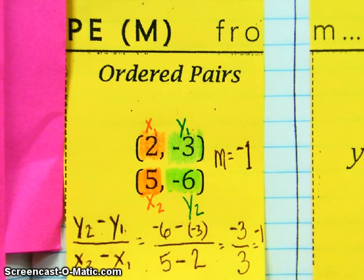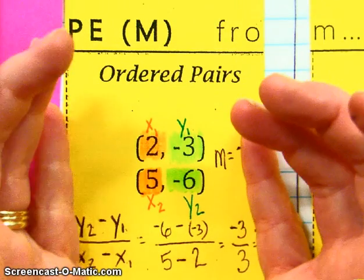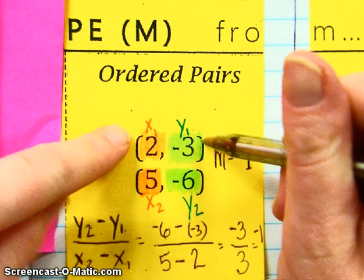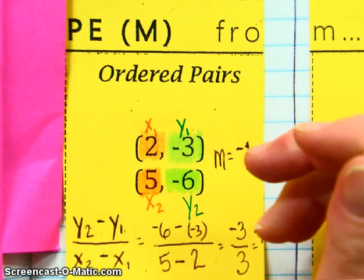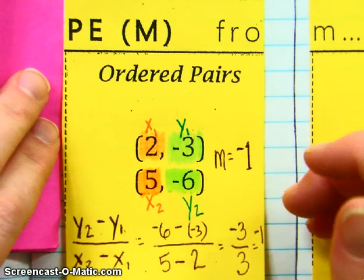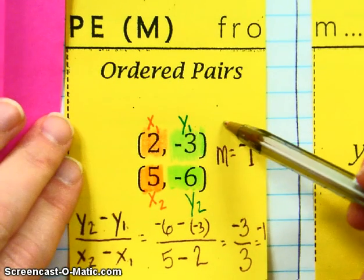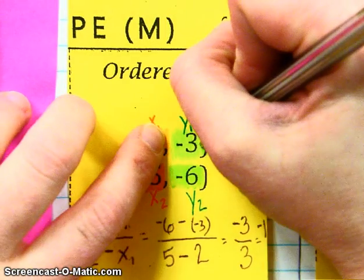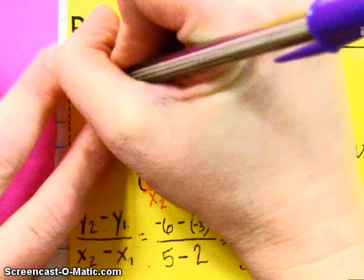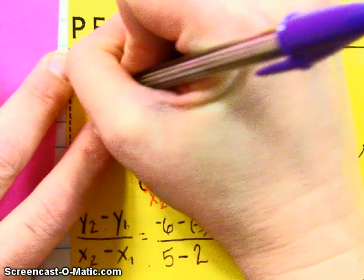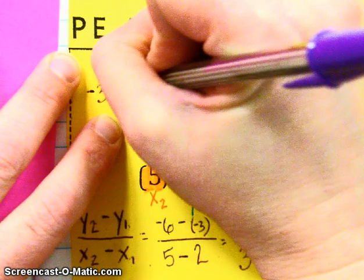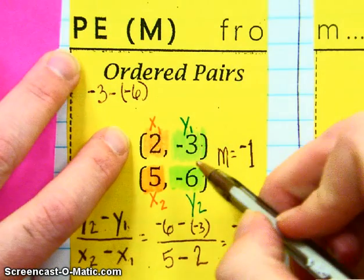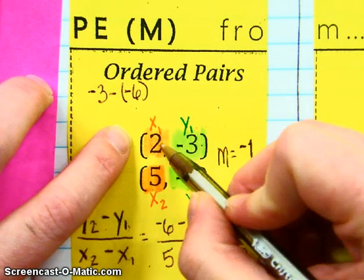Now I would like to point out to you at this moment, that if you have your ordered pairs stacked on top of each other like this, I want to prove to you that you'll still get the same answer if you do it in the other order. What if I said negative 3 minus negative 6?